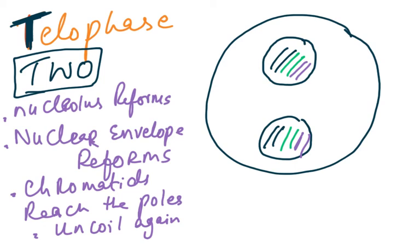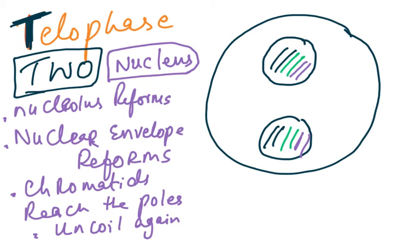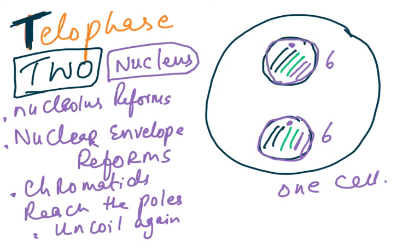Telophase is the last phase of mitosis. The cell now contains two nuclei — it is one cell with two nuclei, each containing six chromosomes matching the original number. The nucleolus starts to reform, the nuclear envelope reforms, chromatids have reached the poles, and the chromosomes uncoil again into thin thread-like structures that cannot be seen under the microscope.